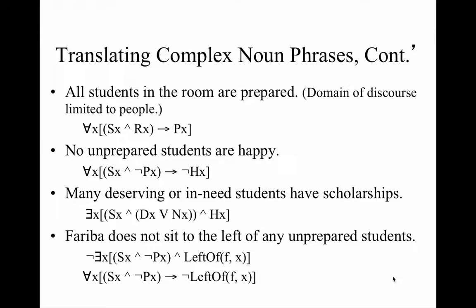Third example: 'Many deserving or in-need students have scholarships.' 'Many' is an existential — there is at least one thing, the thing is a student, it is deserving or in need and has a scholarship. Lastly, a mixed sentence example: 'Fariba does not sit to the left of any unprepared students.' One translation: it's not the case that there is something that is a student and not prepared and Fariba sits to the left of it. Second translation: for every X, if X is a student and not prepared, then it's not the case that Fariba sits next to them.